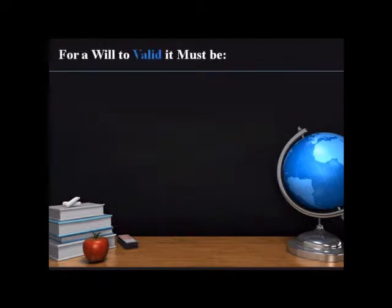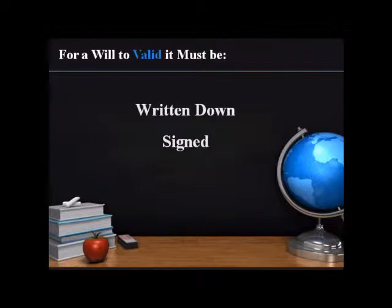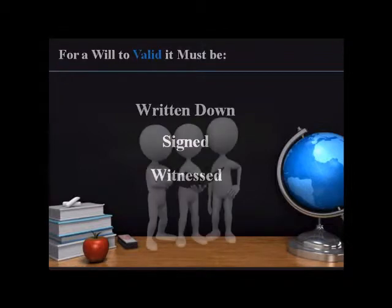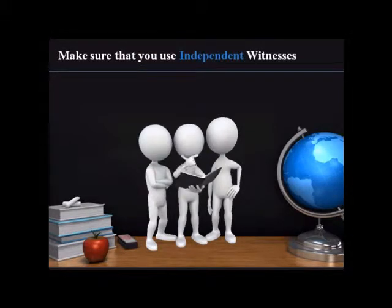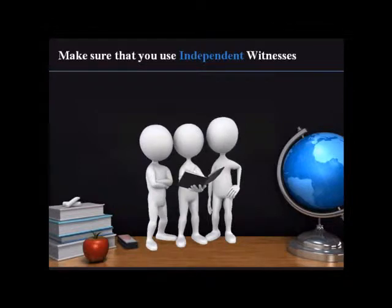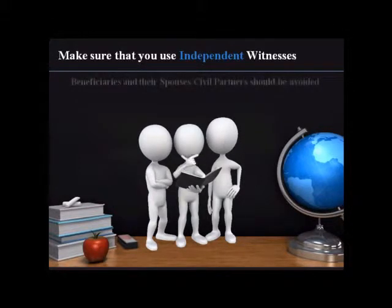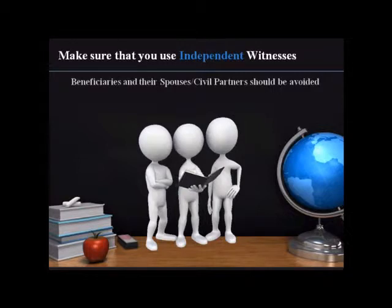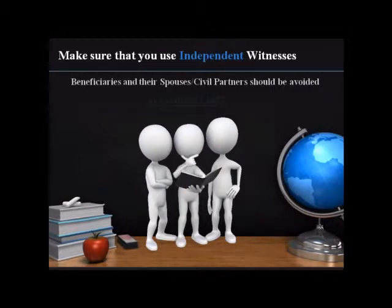For a will to be legally valid, it must be written down, signed by the testator with intention in the presence of two witnesses, and signed by the two witnesses in the presence of the testator. Your chosen witnesses should be independent, which means someone who is not affected by the contents of the will. If a witness is a beneficiary or his or her spouse or civil partner, it will not affect the will's validity, but the witness will forfeit his or her gift in the will under section 15 of the Wills Act 1837.